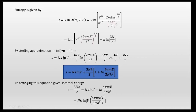Expanding, S = k · n log V + (3n/2) k log(2πmE/h²) − k log(3n/2)!. Applying Stirling's approximation, log(n!) = n log n − n, this becomes S = nk log V + (3nk/2) log(2πmE/h²) − (3nk/2) log(3n/2) + (3nk/2). Rearranging, S = nk log V + (3nk/2)[1 + log(4πmE / 3nh²)].